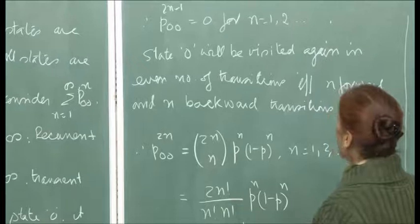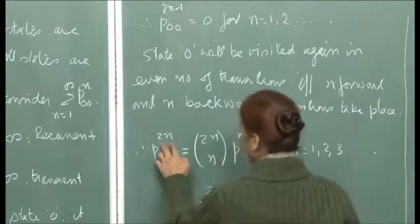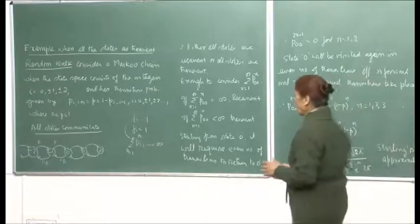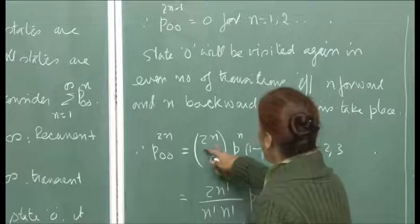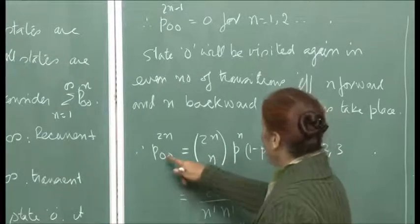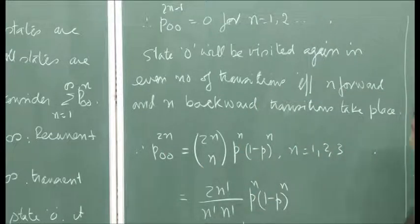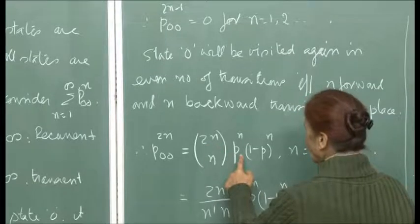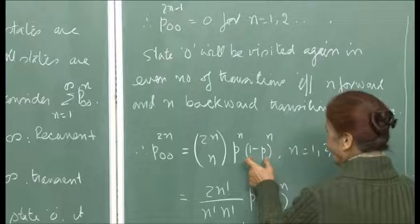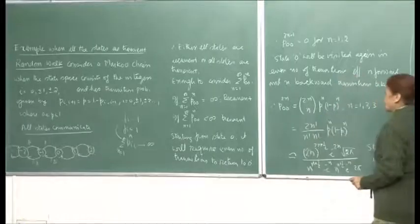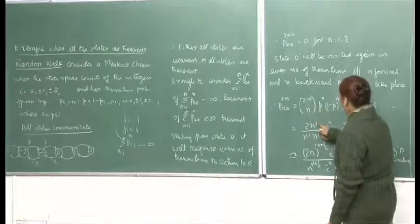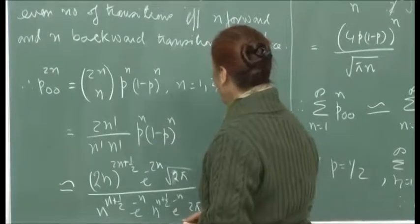For returning in an even number of steps 2n, you require exactly n forward transitions and n backward transitions in any order. Therefore p_{00}^{(2n)} = C(2n, n) · p^n · (1−p)^n, choosing n steps forward out of 2n transitions, with p the forward probability and 1−p the backward probability.